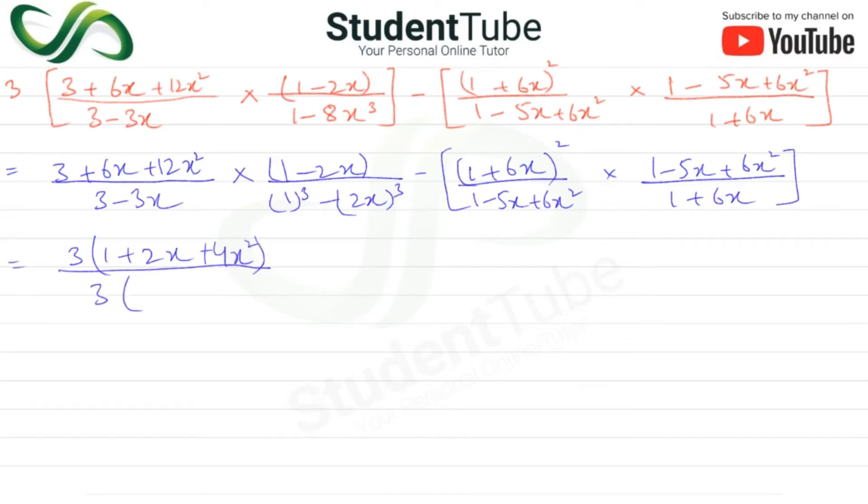We take common, then 1 minus x, multiply by 1 minus 2x.